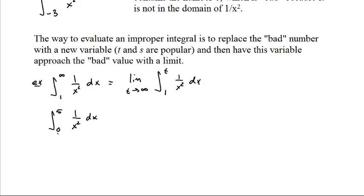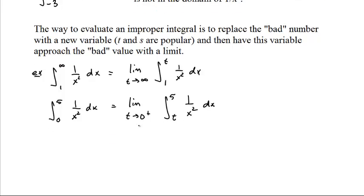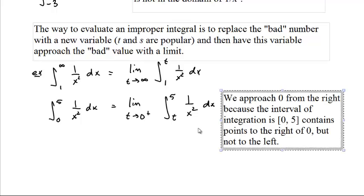Let's say the integral from 0 to 5, 1 over x squared. Now what's wrong here is the 0. It's not in the domain. So what do we do? We replace the 0 with a t and we have t approach 0. Now in this case, we approach 0 from the right. This little plus here means we approach 0 from the right. Why? Because the interval of integration is from 0 to 5, we are using all the points from 0 to 5. So if you're in the interval from 0 to 5 and you want to approach 0, you approach using the points that you're using from the right.